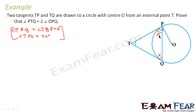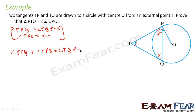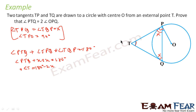Let us try to find the values of other angles in terms of x. Angle PTQ plus angle TPQ plus angle TQP equals 180 degrees — sum of angles of a triangle. So angle PTQ plus x plus x equals 180 degrees, which gives angle PTQ equals 180 degrees minus 2x.